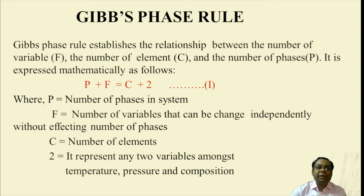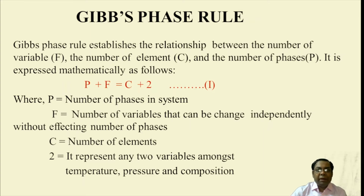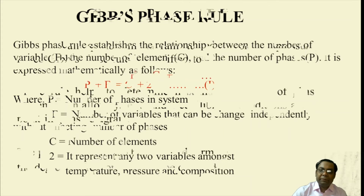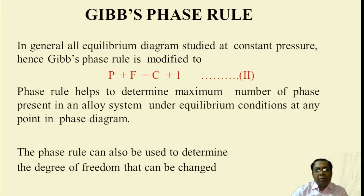The phase rule formula is P plus F equals C plus 2, where P is the number of phases, F is the number of variables that can be changed independently without affecting the number of phases, C is the number of elements, and 2 represents any two variables amongst temperature, pressure, and composition. In general, all equilibrium diagram studies are done at constant pressure.